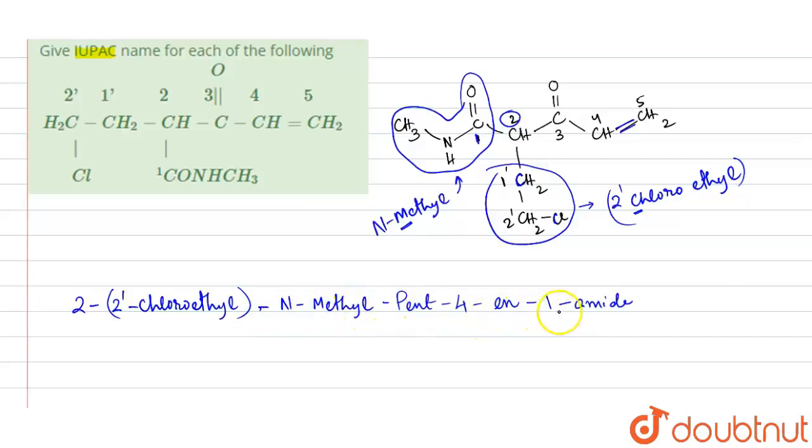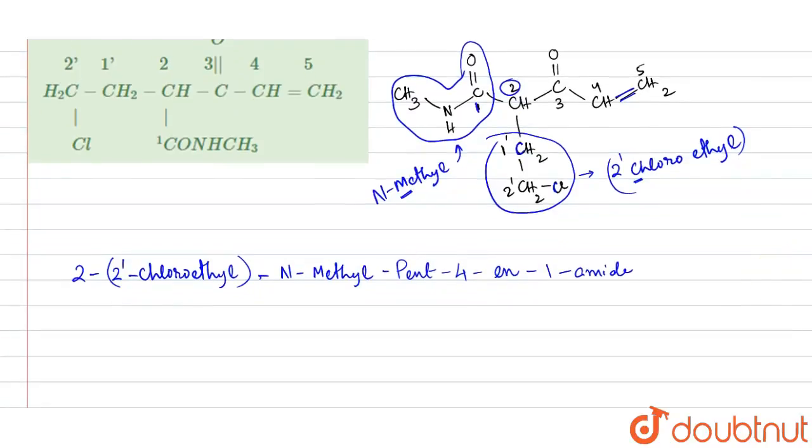Pent-4-en-1-amide. Or simply we can write it like this: 2-(2-chloroethyl)-N-methyl, this is N-methyl-pent-4-enamide.